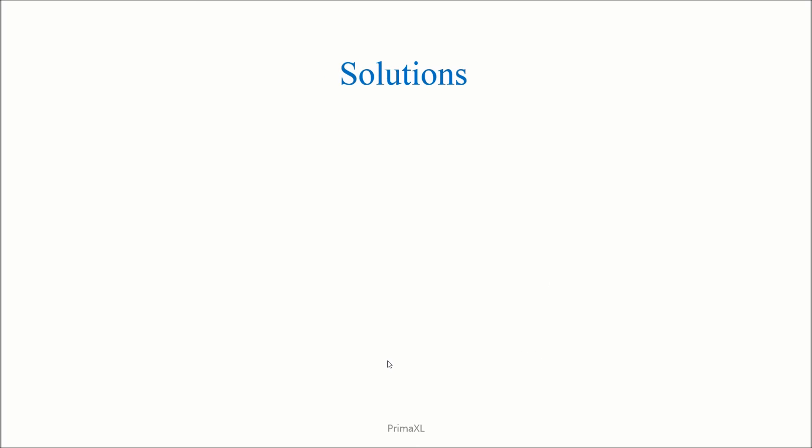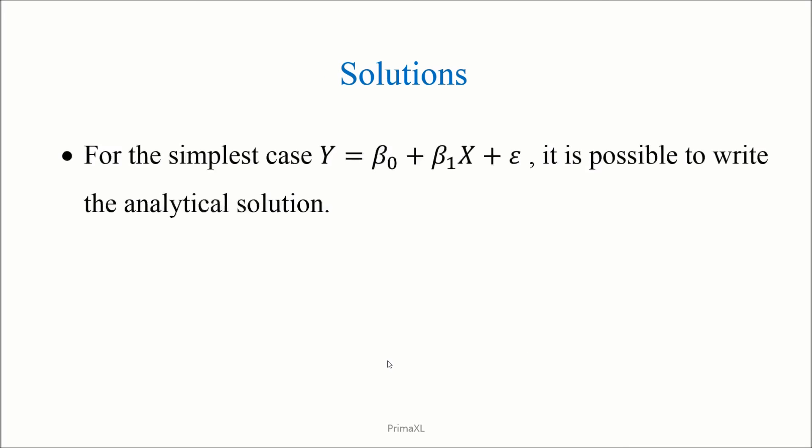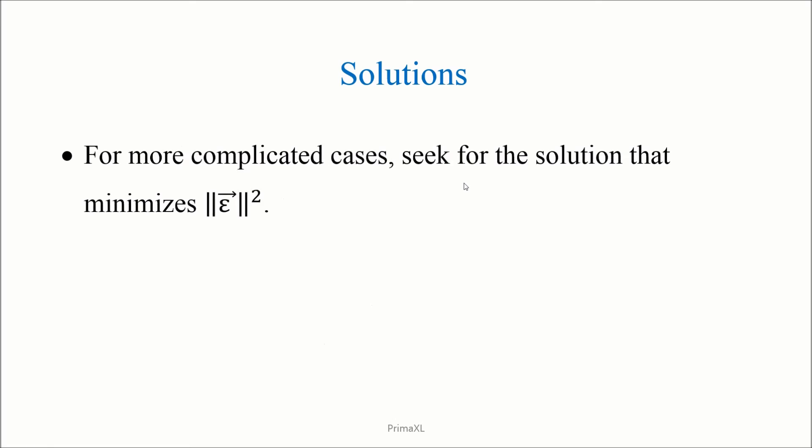As for the actual values of the beta coefficients, we can calculate them analytically for the simplest case where there is only one x variable. The solution is given by these expressions. For more complicated cases, we seek for the solution by minimizing the square of the epsilon vector. This method is called the ordinary least square. The solution can be written using vectors and matrices like this.